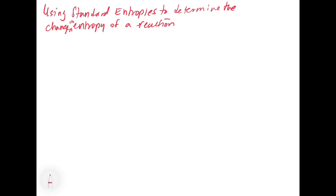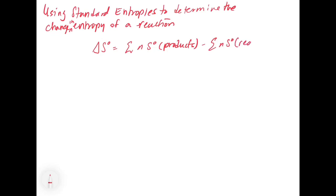The equation is going to be reminiscent of how we did delta H. If we want delta S0, we take the sum of the entropy of the products times the number of moles involved in the reaction, minus the sum of the number of moles times the entropy of the reactants. Remember, entropy is a state function, so it doesn't matter what the pathway is — as long as we know the products relative to the reactants, we can get the change in entropy.